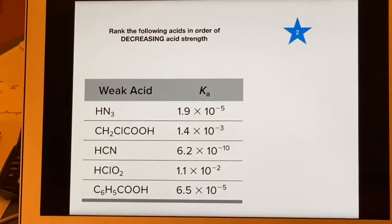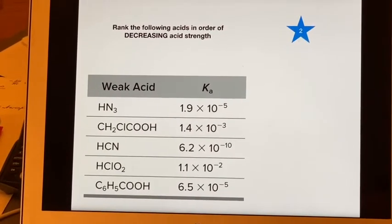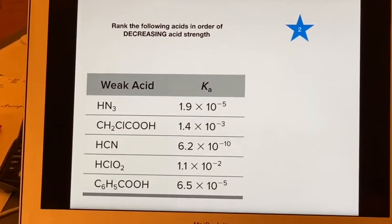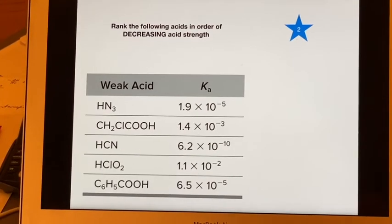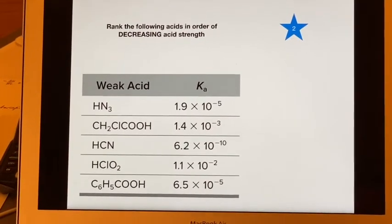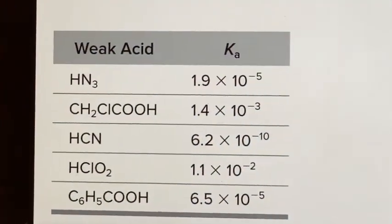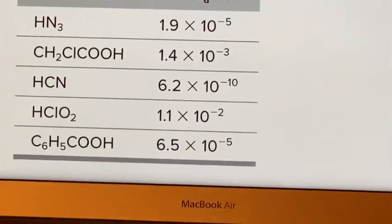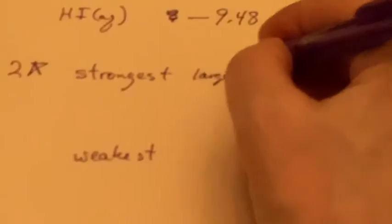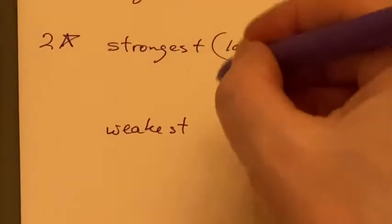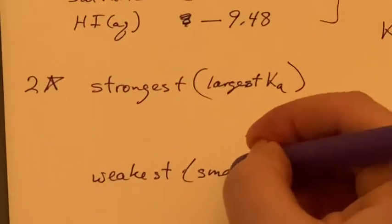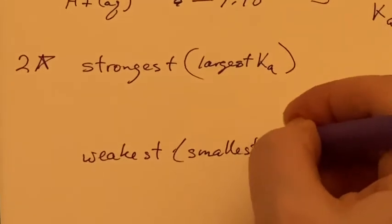Now they want us to rank acids. And we want to do them in decreasing acid strength. So I want the strongest first and the weakest last. They've given me the Ka. I know the strongest is going to have the largest Ka. And the weakest then would have the smallest Ka.